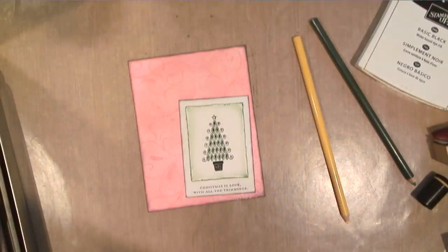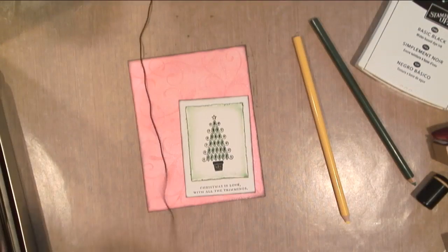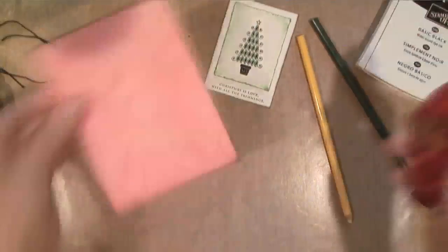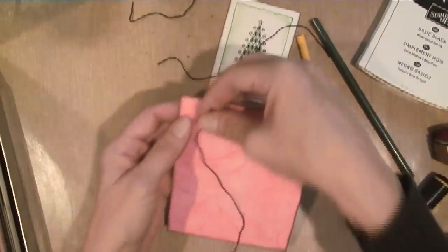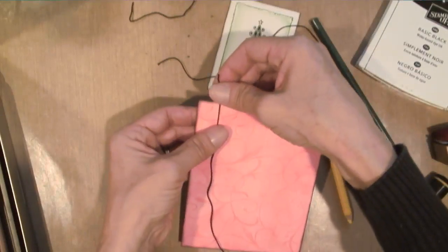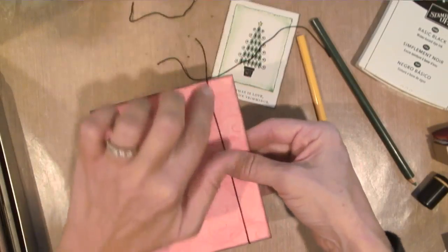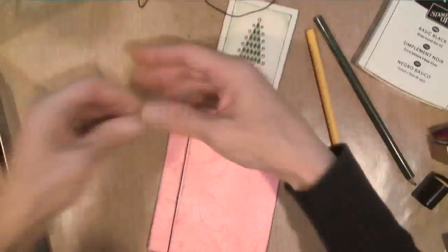And I'm just using some plain black embroidery thread that I got at the craft store. I'm going to cut three pieces, one to go down, one to go across, and one to make a bow. I'm just going to wrap around the edges. So I kind of was going for the gift box look with some ribbon on it.